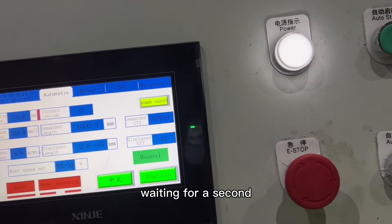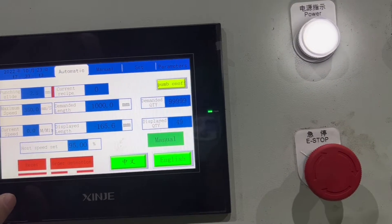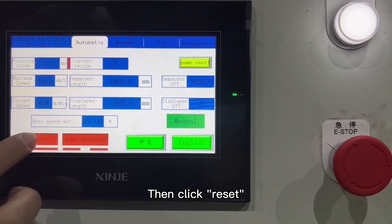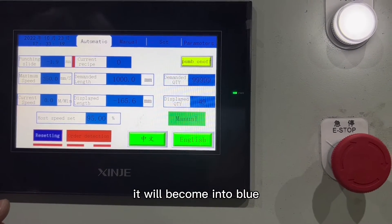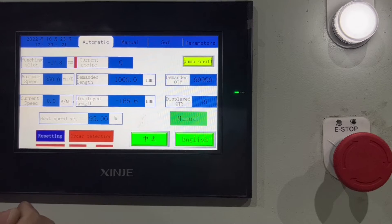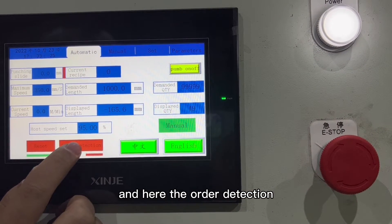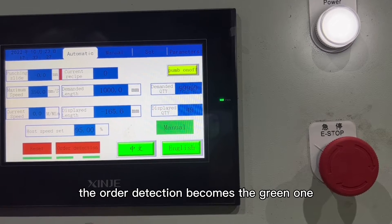Reset. Moving, waiting for the sound. Machine used to have this sound, like a fan. And then this reset becomes the blue one. See, becomes the blue one, green one. And here, order detection becomes the green one.